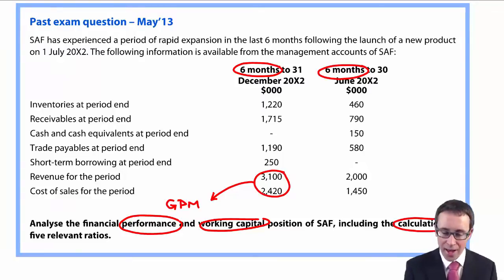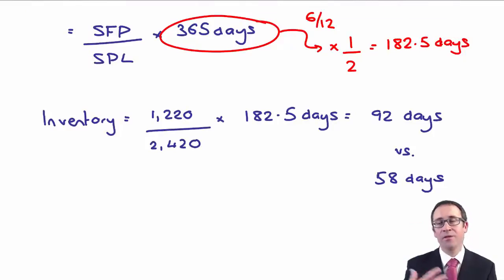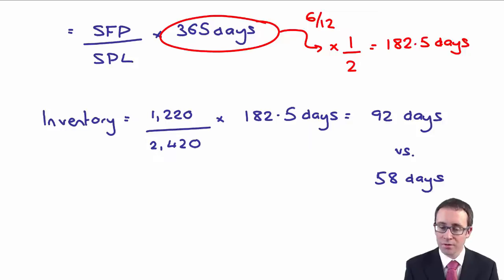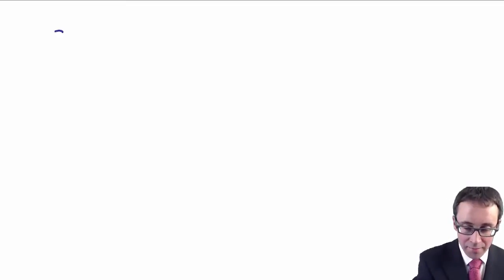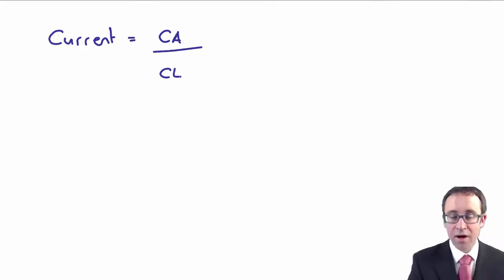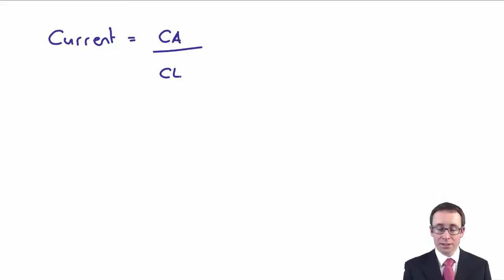Hopefully that shouldn't cause you any more difficulty. You can go through and work out the inventory days, receivable days, and payable days. You've also worked out the gross margin. The other ratio you can calculate based on the information given is your current ratio — current assets divided by current liabilities.